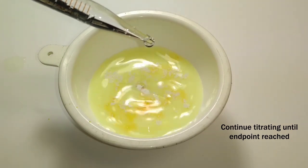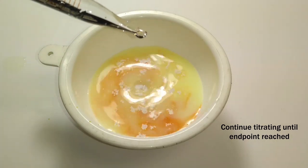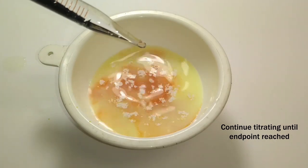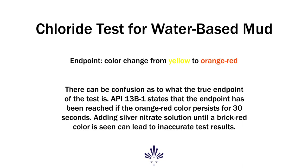When all of the chlorides have reacted, the silver ions will react with chromate ions from the indicator solution to form silver chromate, which causes the color to change from yellow to red. This color change marks the endpoint of the test. There can be confusion as to what the true endpoint is. API 13B1 states that the endpoint has been reached if the orange-red color persists for 30 seconds. Adding silver nitrate solution until a brick-red color is seen can lead to inaccurate test results.